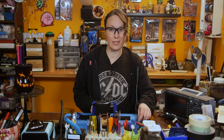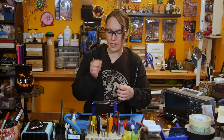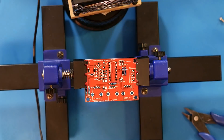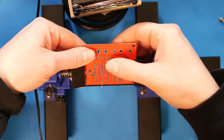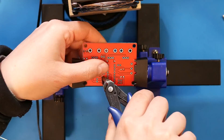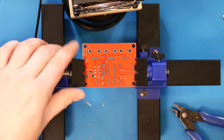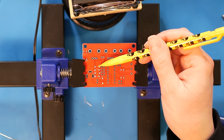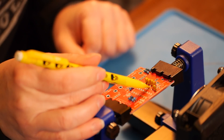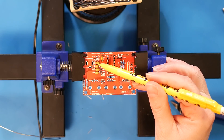Next, we have the five non-polarized ceramic capacitors. C2 is 104, C5 is 105, C6 is the 473, C7 is the 222, and C8 is the 101. You can see from the traces on the back of the board that each of these capacitors connects to one pin on the pin headers here. This pin header will be used to set the frequency range of the generator, so these capacitors determine those frequency ranges.